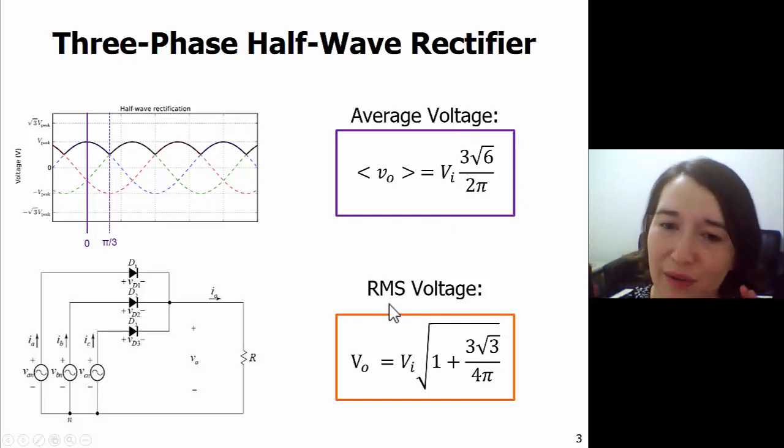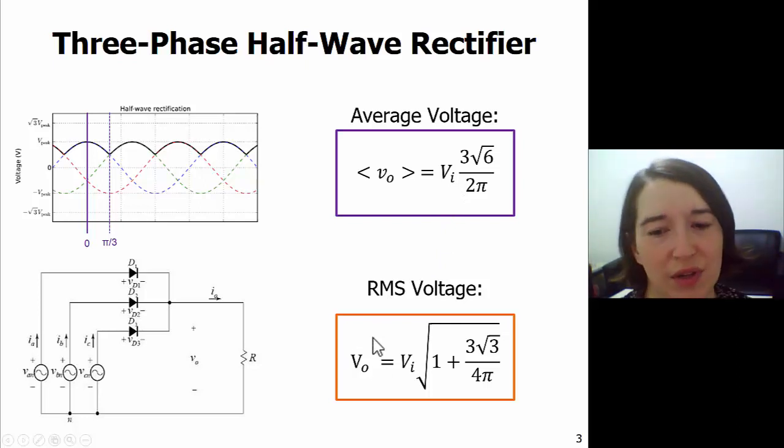And if we want to find the RMS output voltage, we can also do that calculation down here. And again, VI is the RMS value, so you can use these equations to help you solve problems more quickly.